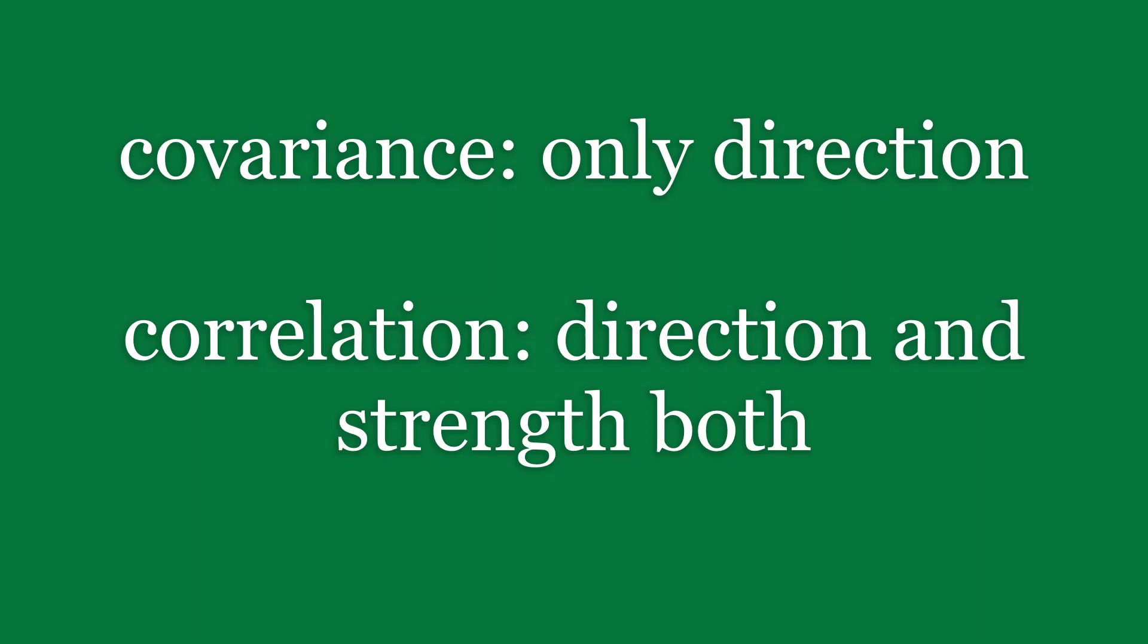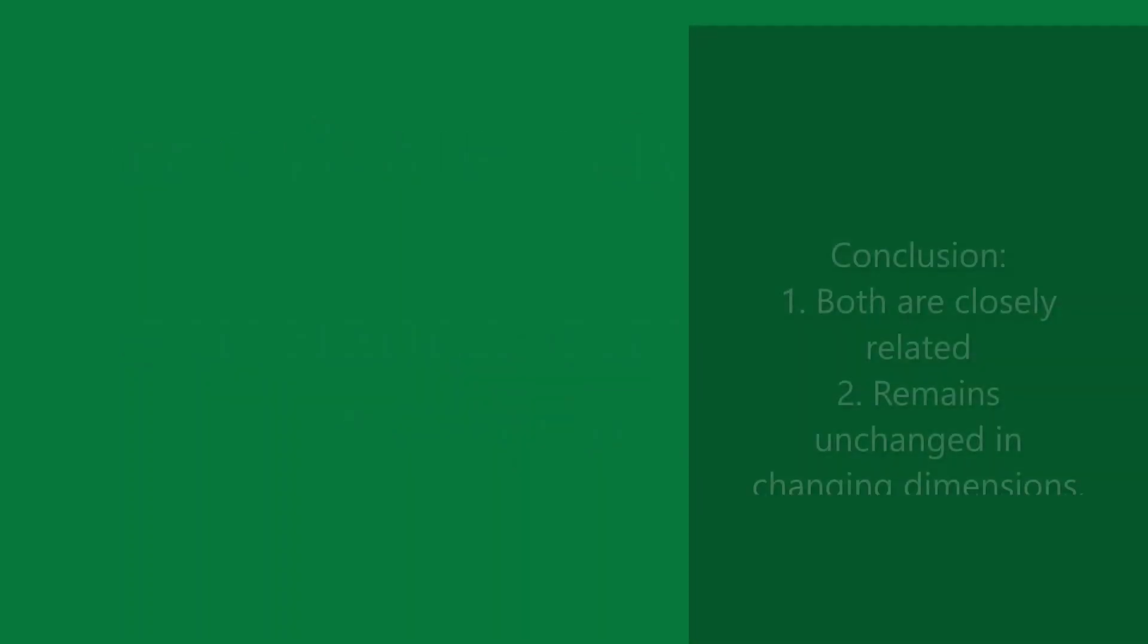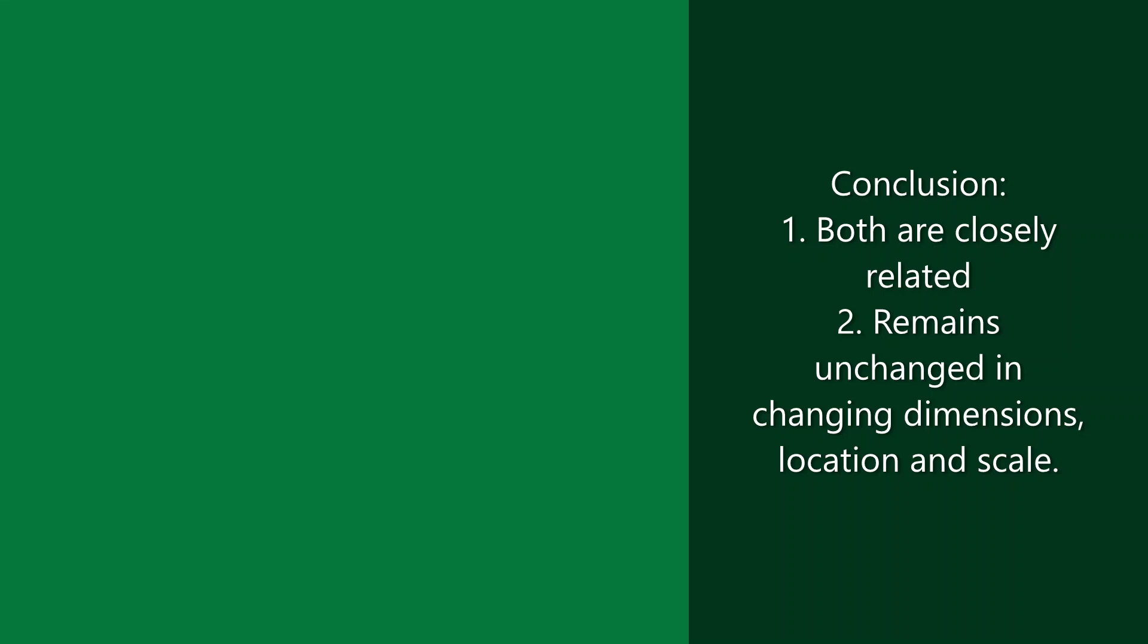The value of correlation ranges from minus one to plus one. So finally, in conclusion, we can say that both correlation and covariance are very closely related to each other and yet they differ a lot.